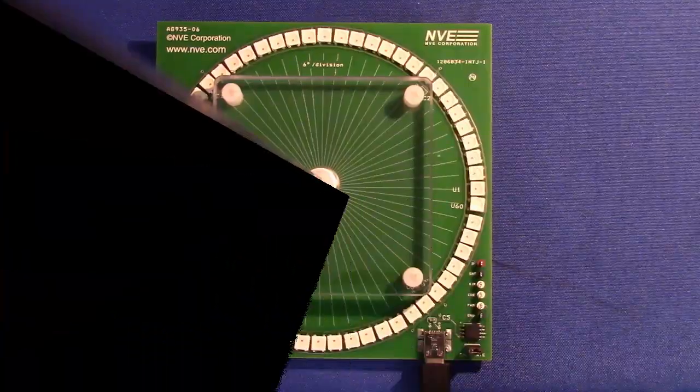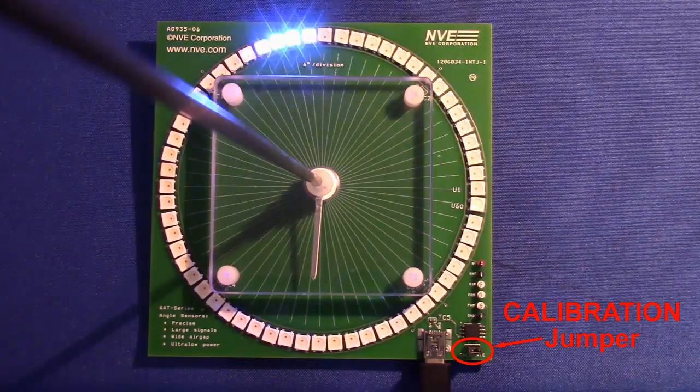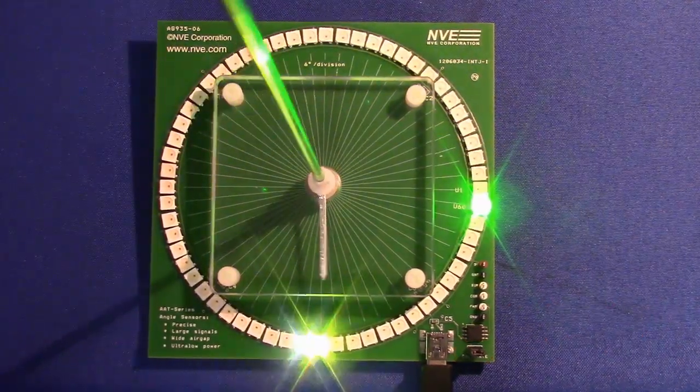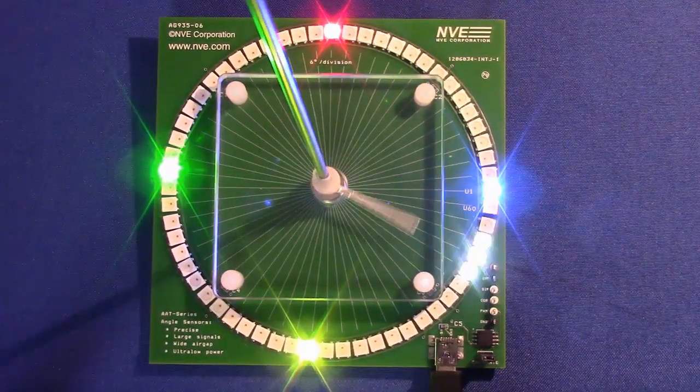The board is factory calibrated, but it can be recalibrated by cycling the power with this jumper in place. Four colored LEDs light up as it gets parameters for each quadrant.